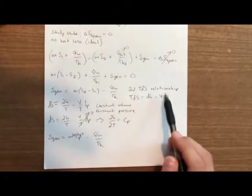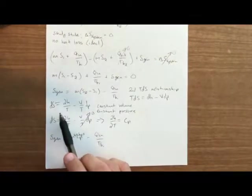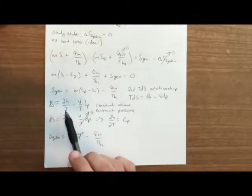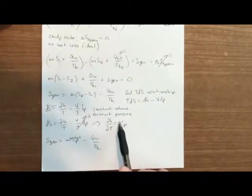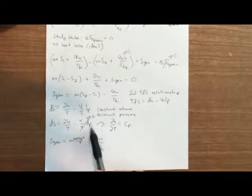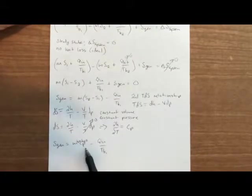So rearranging that, we get S gen equals the mass times S2 minus S1 minus Q in over Tb1. Using our second TDS relationship, TDS equals dH minus V dP. We rearrange this to get dS equals the partial of H over T minus V over T dP. Since our system is at constant volume and constant pressure, we can say that dS is equal to dH over T and this part cancels out because of the constant pressure, constant volume. We also know that dH over dT equals Cp. So plugging all this into our original equation up here gives us our final equation, which is S gen equals the mass of the water times the specific heat index of the water at constant pressure minus Q in over the temperature of our initial boundary.